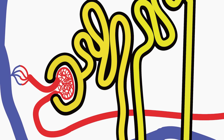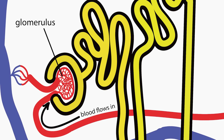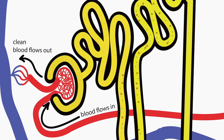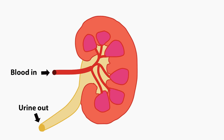In the nephron, blood flows through a group of capillaries called the glomerulus, where waste products are filtered through a very small tubule called Bowman's capsule. Clean blood flows back into the body, and waste flows through the nephron into the bladder, and is excreted as urine.